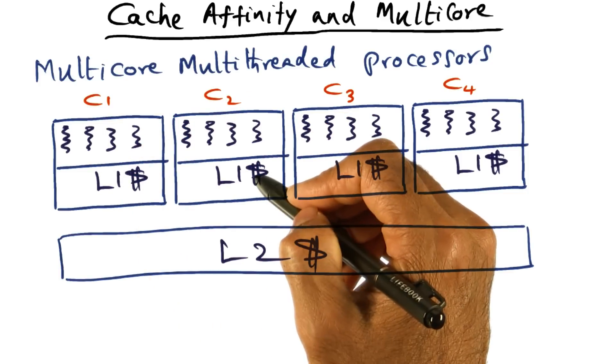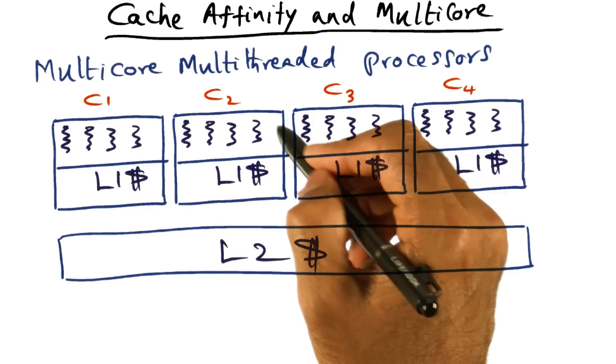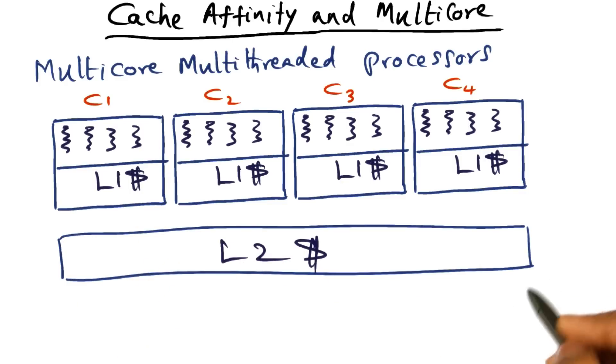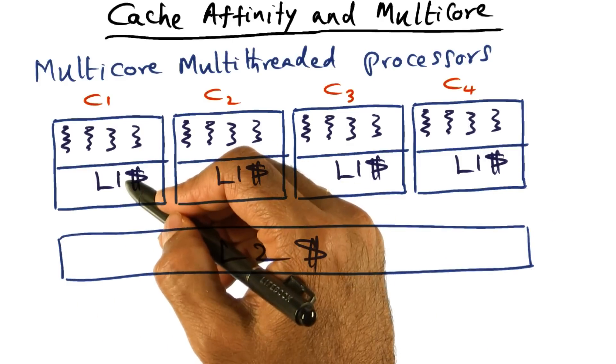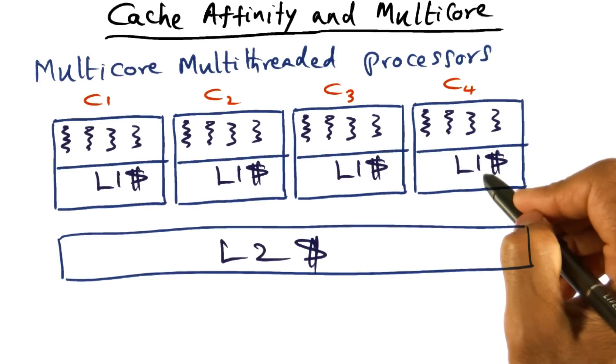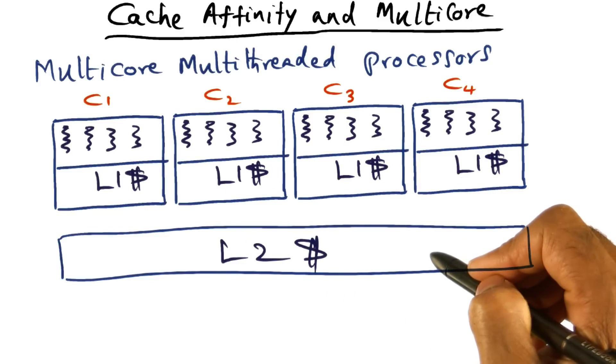Similarly, L1 cache here is specific to this core C2, shared by the threads that are on it. On the other hand, this L2 cache is common for all the cores. So if there's a miss in any one of these L1 caches, the hope is that they may be able to find it in the L2 cache.